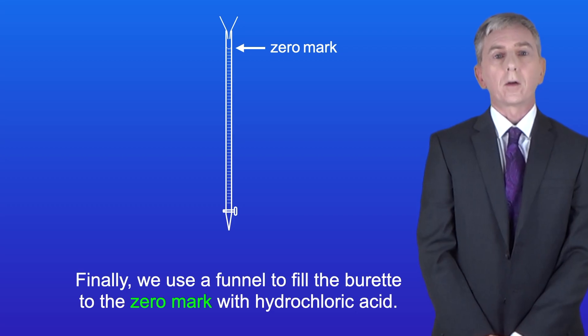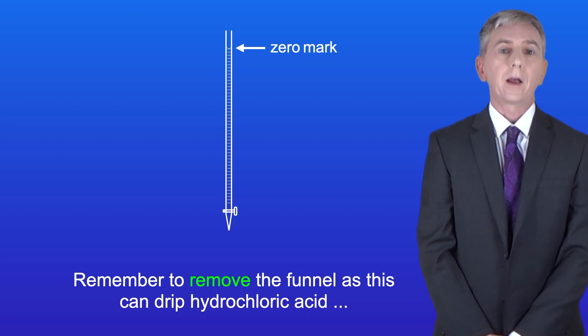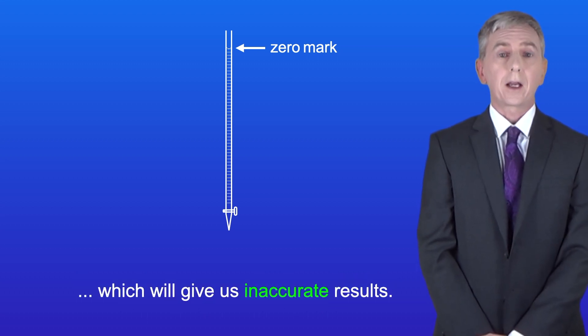Finally, we use a funnel to fill the burette to the zero mark with hydrochloric acid. And remember to remove the funnel as this can drip hydrochloric acid, which will give us inaccurate results.